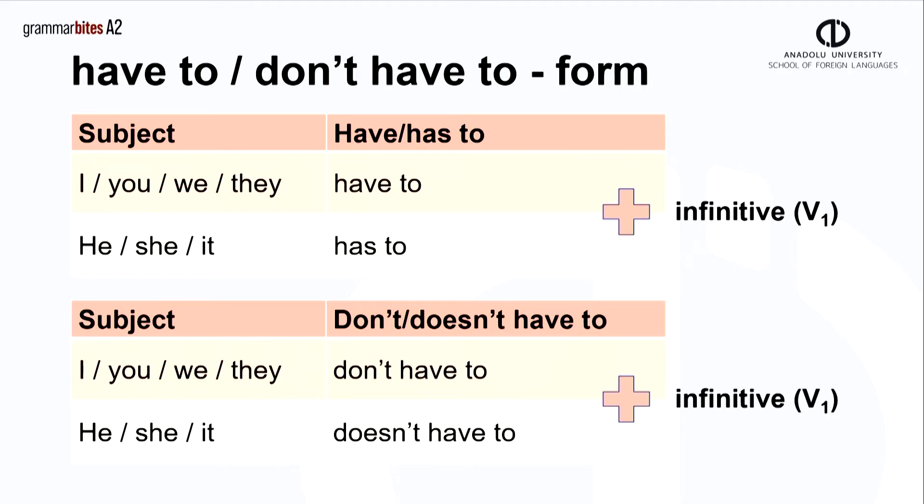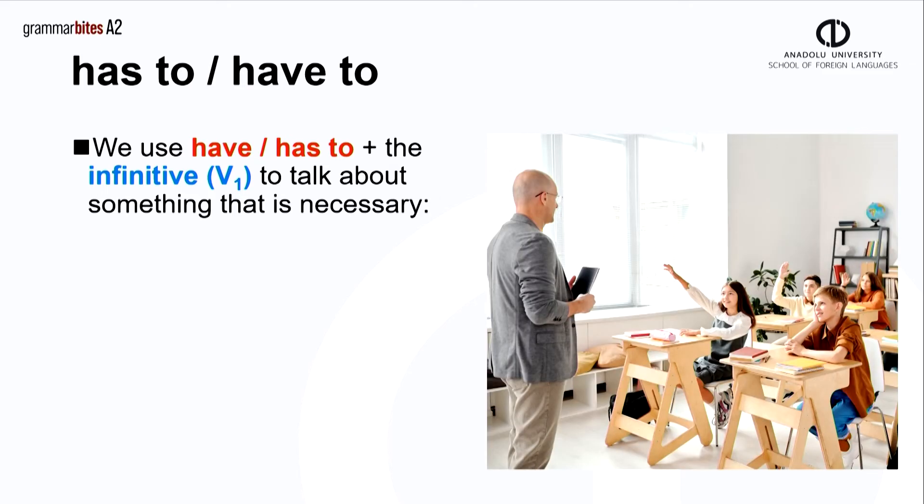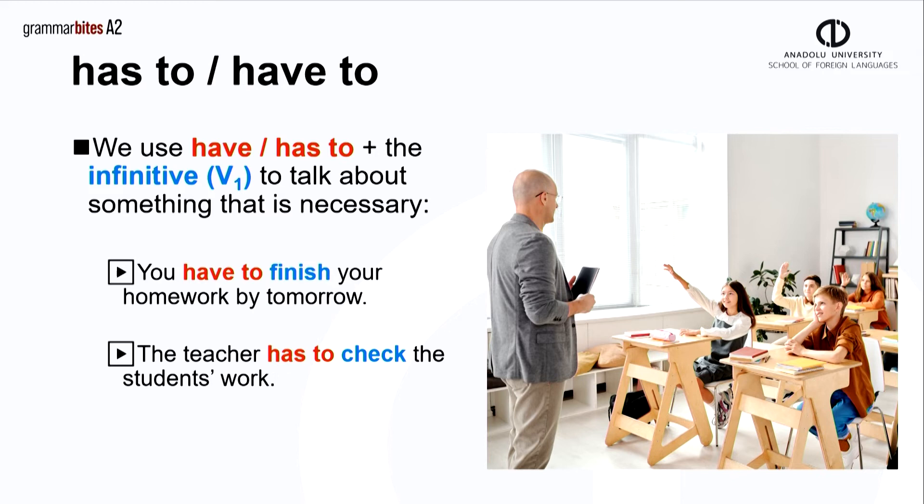Now let's look at how we use have to and don't have to in sentences. We use have to or has to plus the infinitive to talk about something that is necessary. The teacher tells the class, you have to finish your homework by tomorrow. And the teacher has to check the student's work.